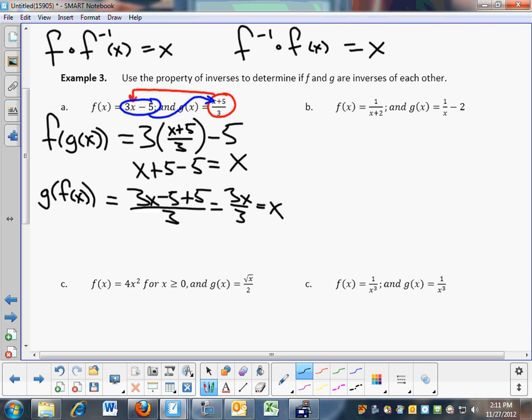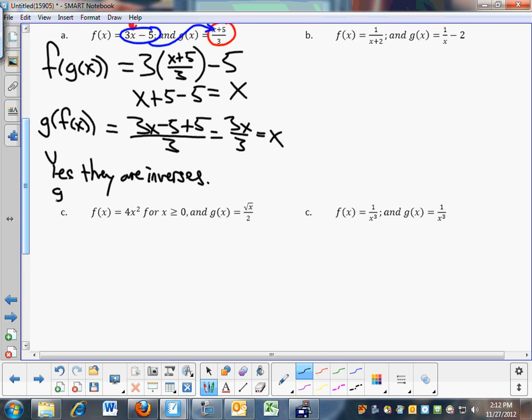So I got x for both of them. So this is where a lot of people get messed up, too. They say, so is the answer x? No, the answer is not x. The answer is determine if they're inverses of each other. So what's the answer? Yes. They are inverses. You could say g of x is equal to the inverse of f of x. That would be another way of saying the same thing.